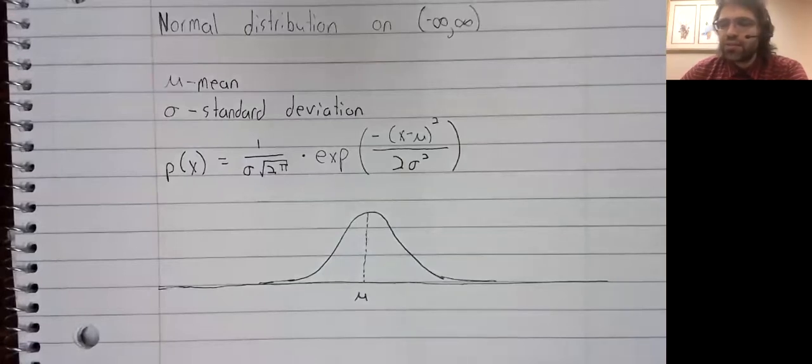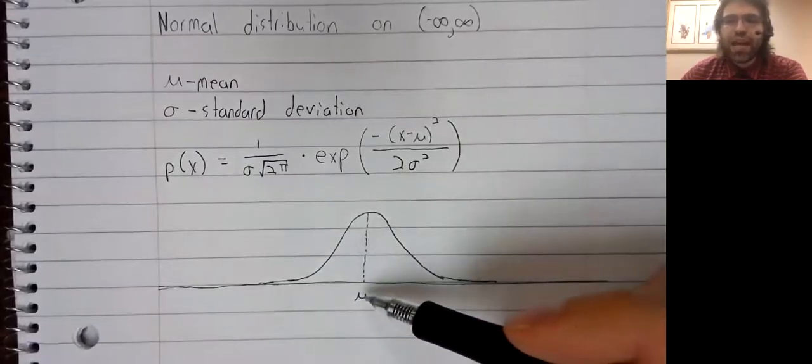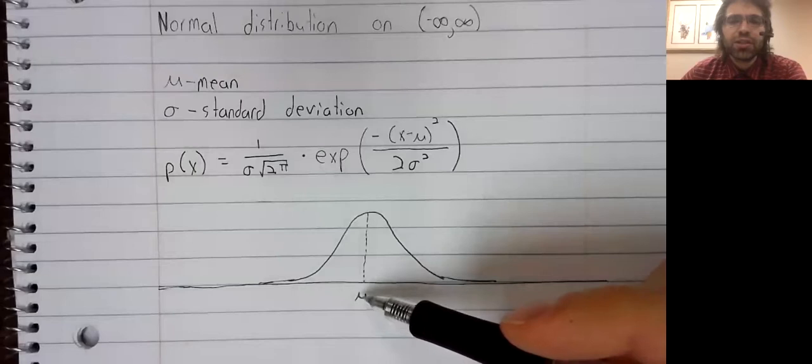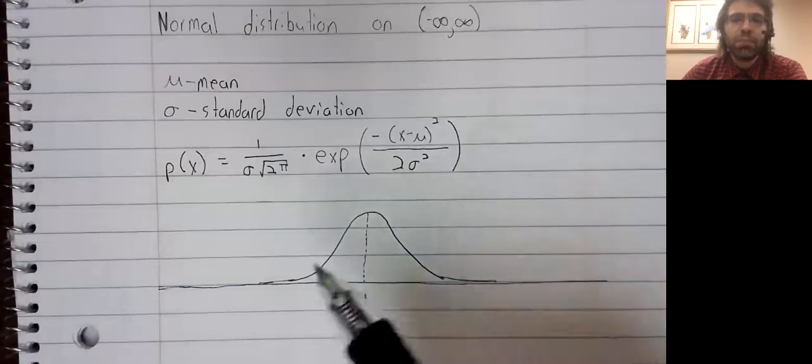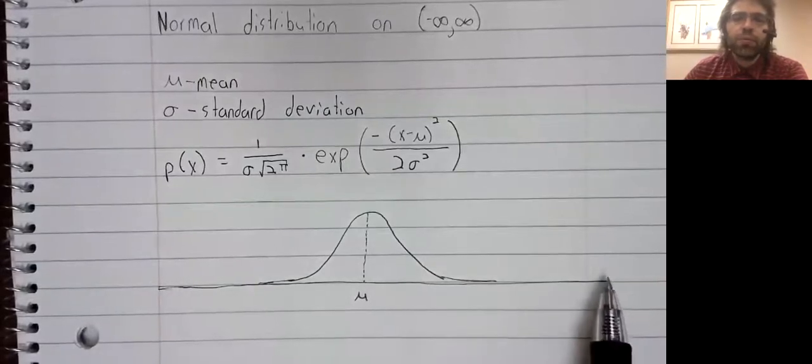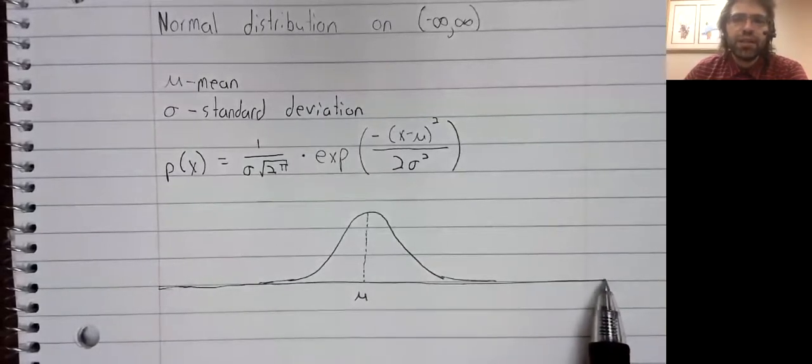In practice, it's going to be fairly close to the mean. It's very unlikely that we get a number way over here or way over here.